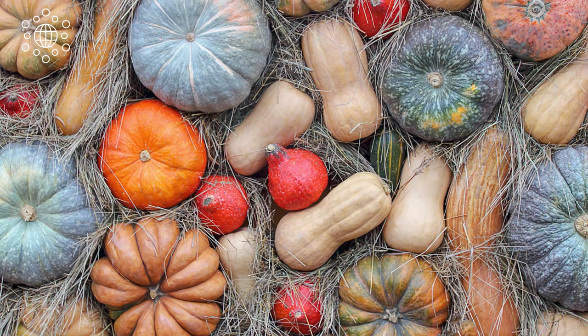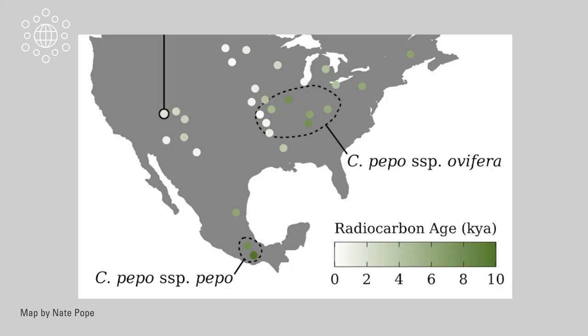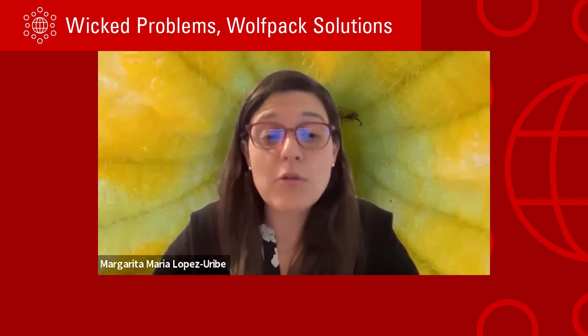Squash, pumpkins, and gourds offer a fascinating system to study the question of how domestication and widespread cultivation of crops has shaped the evolutionary trajectories of pollinators. This crop was first domesticated in southern Mexico about 10,000 years ago and moved around North America several thousand years after. About 2,000 years ago, squash was part of a large-scale agricultural system across North America, combined with other important crops like maize.